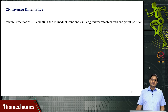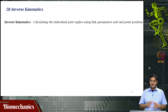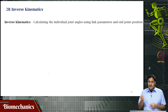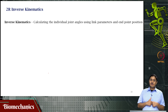Welcome to this video on biomechanics. We have been looking at kinematics; specifically in the previous video we looked at forward kinematics of a 2-link serial kinematic chain. In this video we will be looking at 2R inverse kinematics — in other words, if I tell you the endpoint coordinates of a 2-link serial kinematic chain and the link lengths, can you tell me what is the joint angle at each of the links?